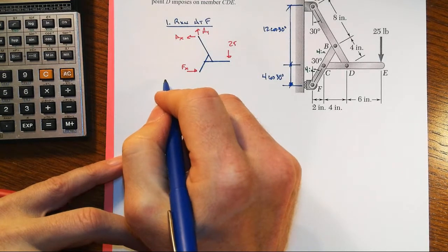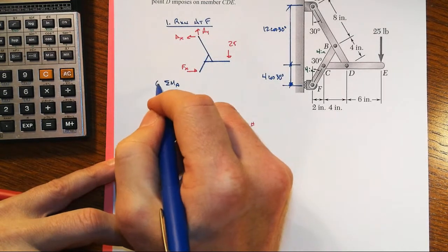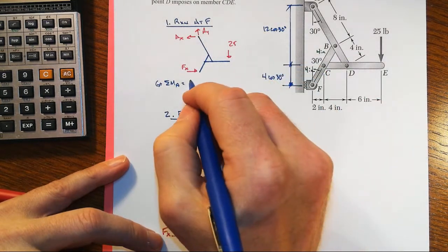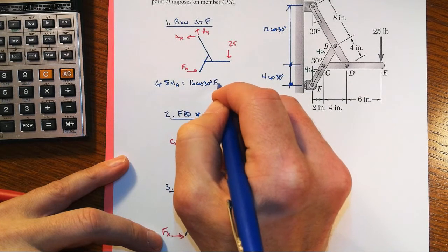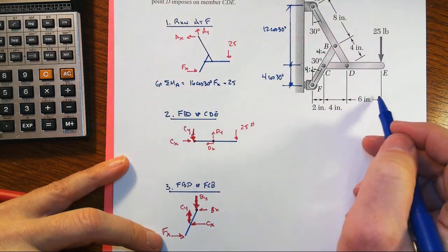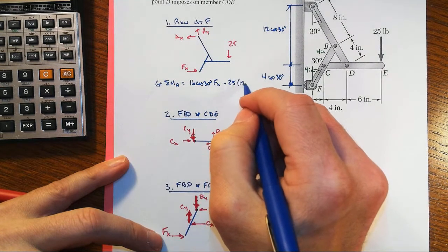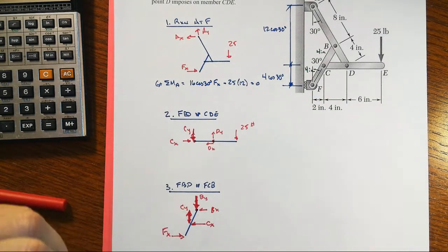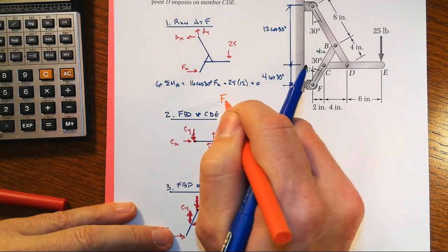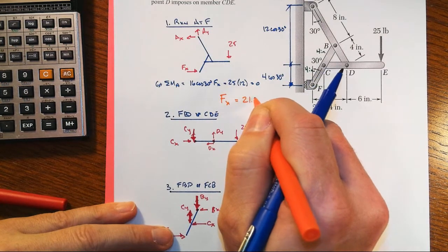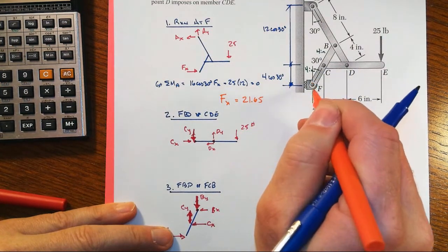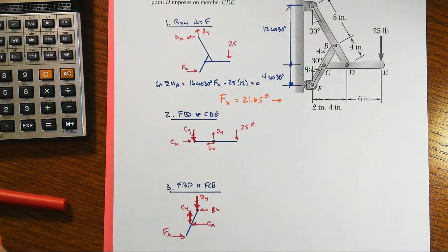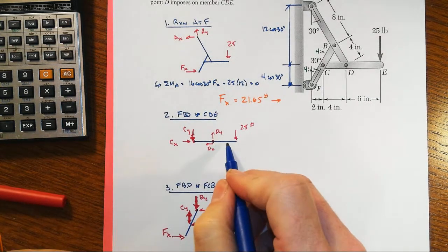So let's go back up here. Sum moments about point A. Let's take counterclockwise as positive, and we'll have this whole height of 16 cosine 30 degrees times FX minus 25 times this entire moment arm, which is 12 inches, set it equal to zero. Therefore, we find out that FX is a positive 21.65 and acting in the direction as shown here, so therefore going to the right. So we did do that correctly.